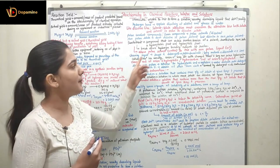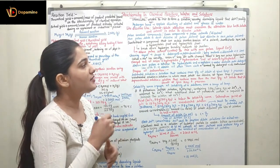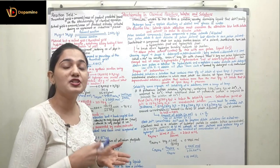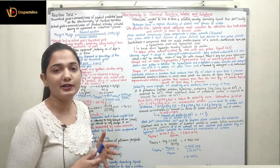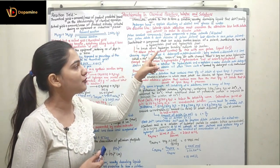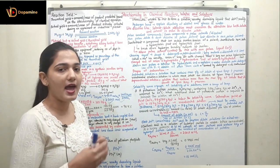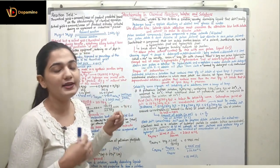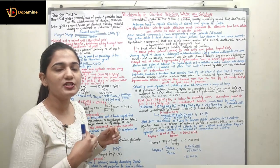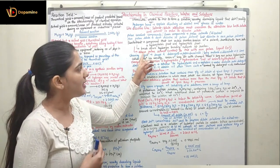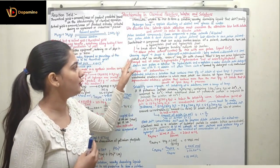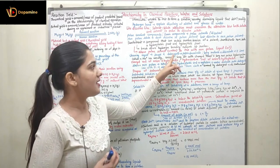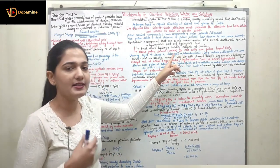Surfactants are compounds that reduce the surface tension of a solvent. Surfactants have both a hydrophobic part (water-fearing) and a hydrophilic part (water-loving). Surfactants break down the hydrogen bonding network at the surface, acting as a surface tension reduction, and allow polar solvents to mix with non-polar liquids like oil. They act as cleaning agents — soaps and detergents are surfactants. Detergents are formed from petrochemicals.